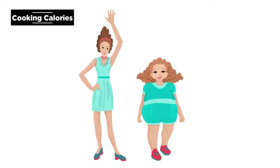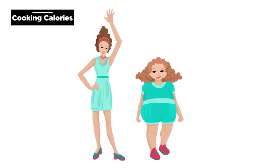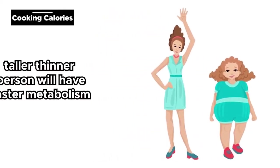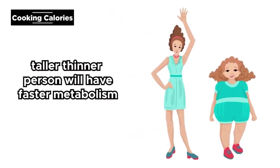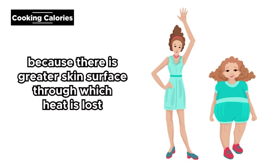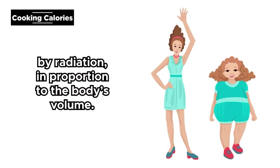Height: If two people weigh the same, the taller, thinner person will have the faster metabolic rate because there is greater skin surface through which heat is lost by radiation in proportion to the body's volume.